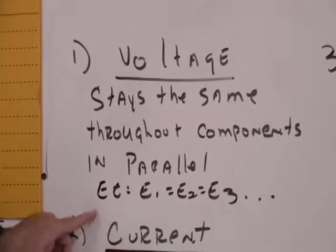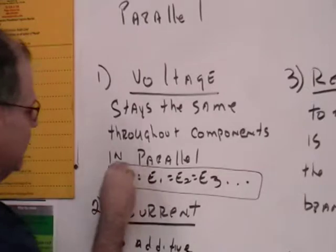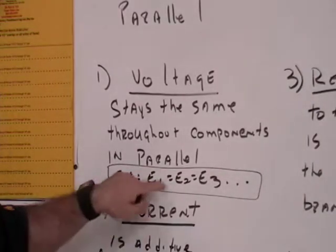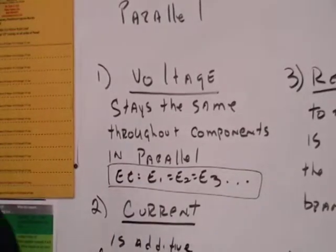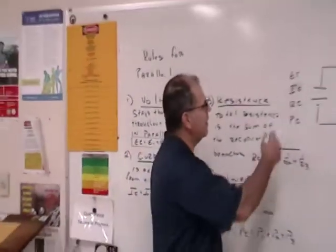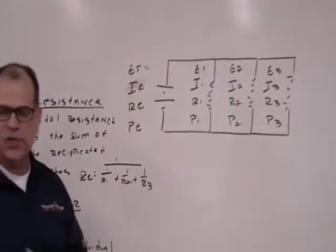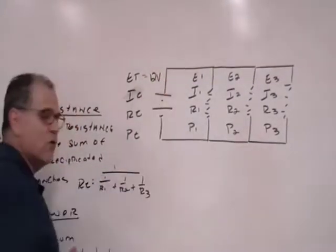So our equation for parallel voltage is this one right here. The total voltage, E of T, is equal to E of 1, is equal to E of 2, is equal to E of 3. And I'll give you an example of what I mean by that. So we come over here to our parallel circuit and let's assume that our battery source here has got a value of 12 volts.